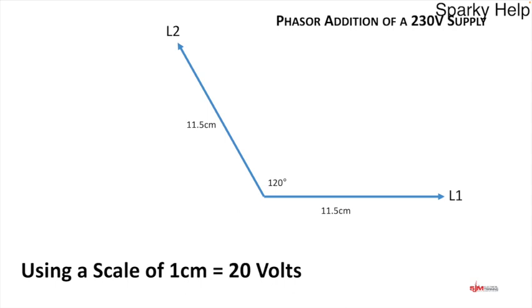How do we add them up? Because they're out of phase, this method will take into consideration the out of phase part. We literally draw a line from one point to the other. If we do that, L1 and L2 added together is approximately equal to 19.9 centimeters.